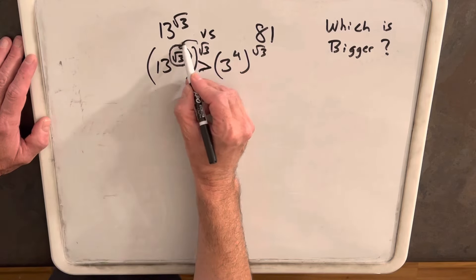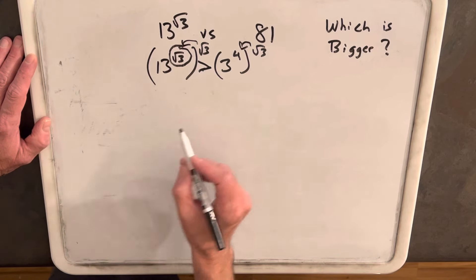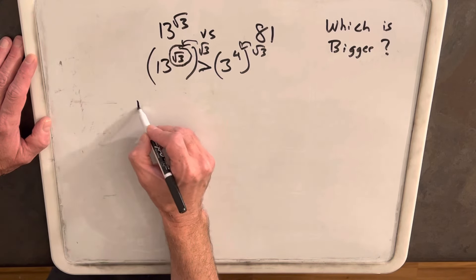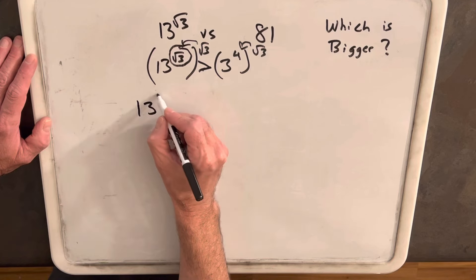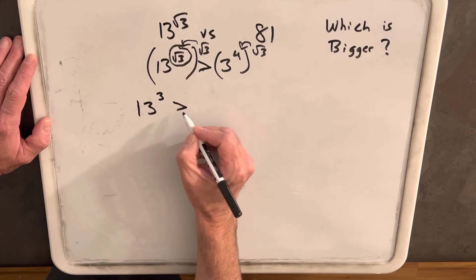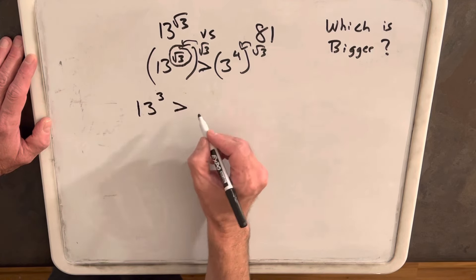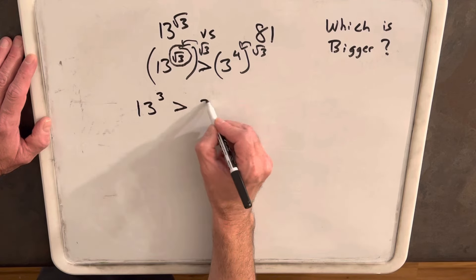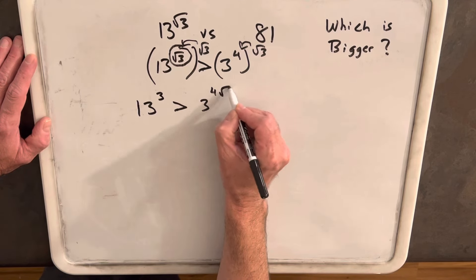Then just by exponent rules, it allows us to multiply inside the parentheses. And so we've simplified this to 13 cubed is hopefully greater than 3 to the 4 square roots of 3.